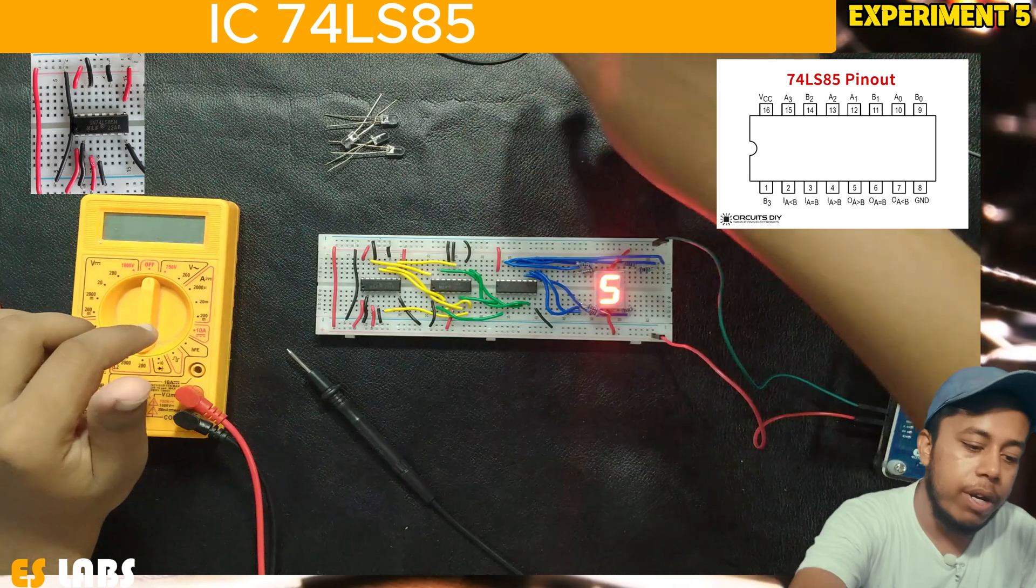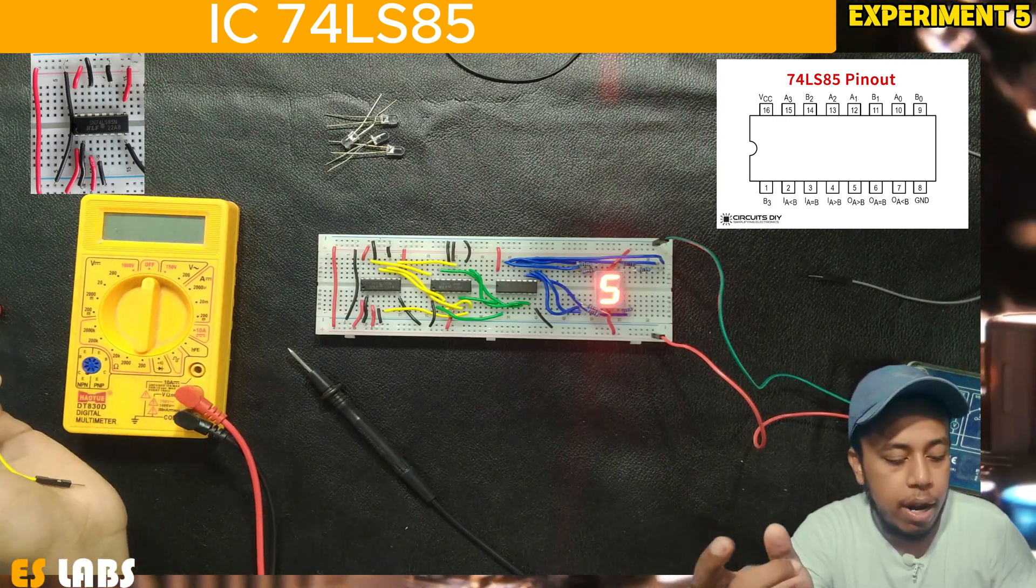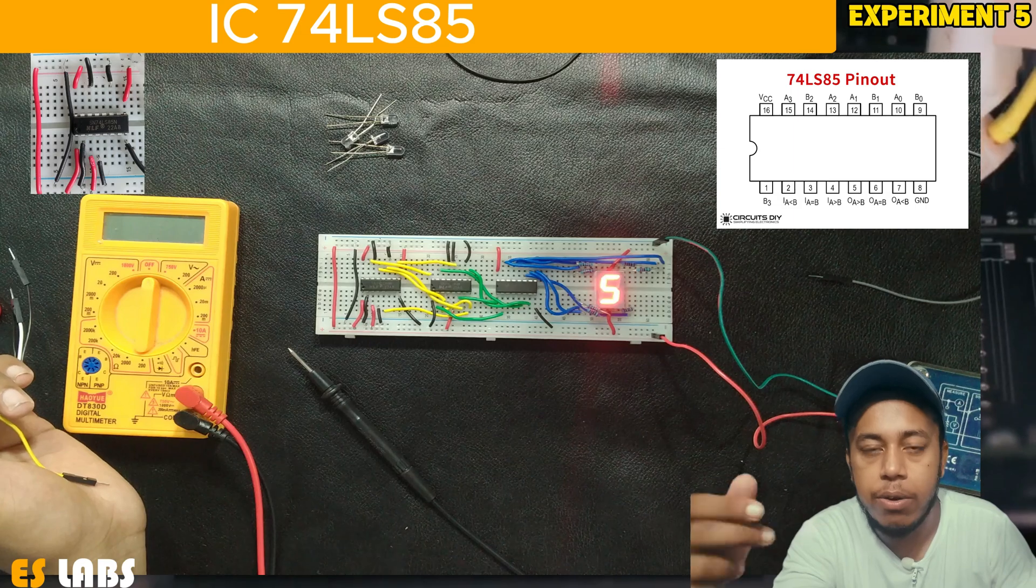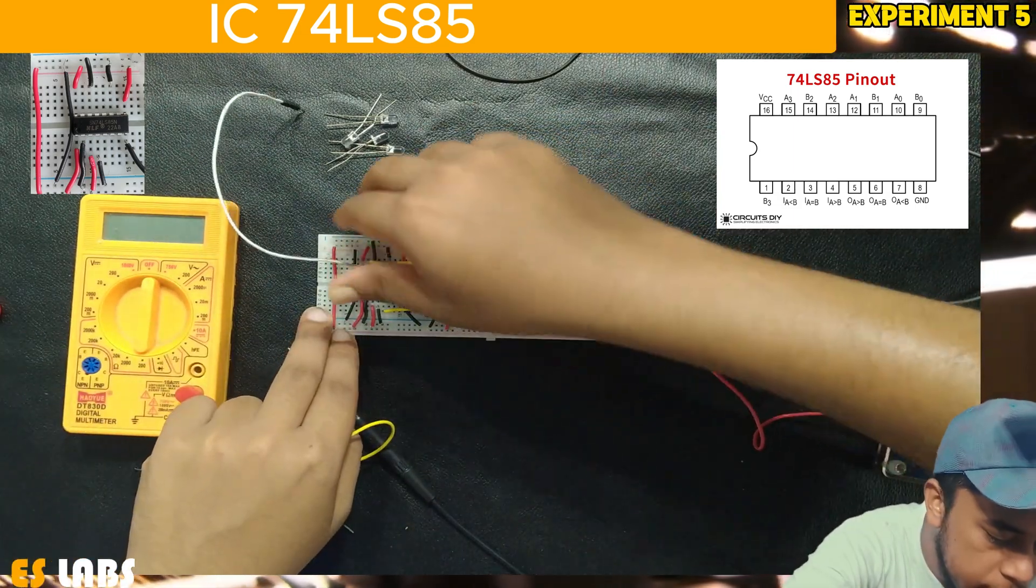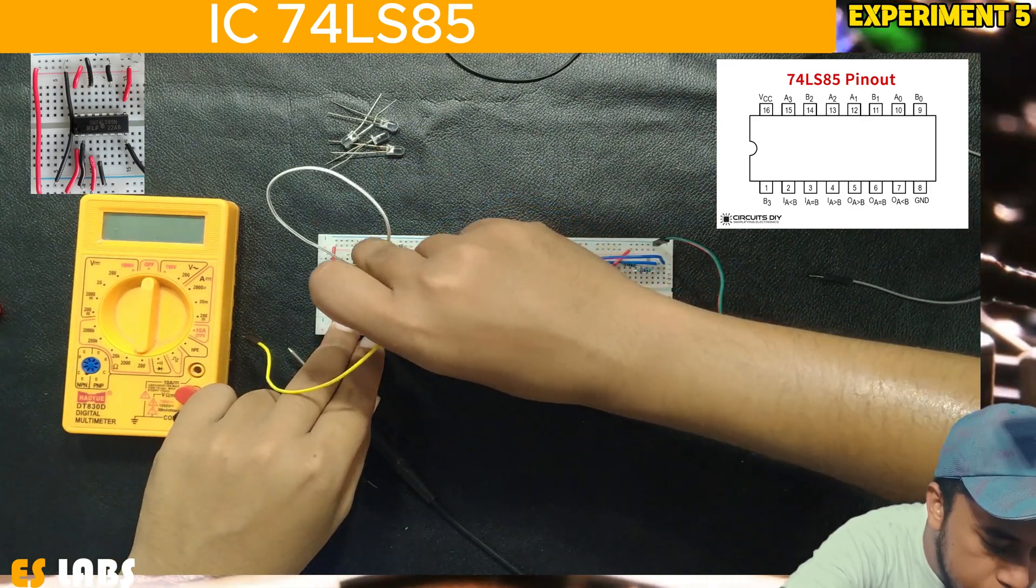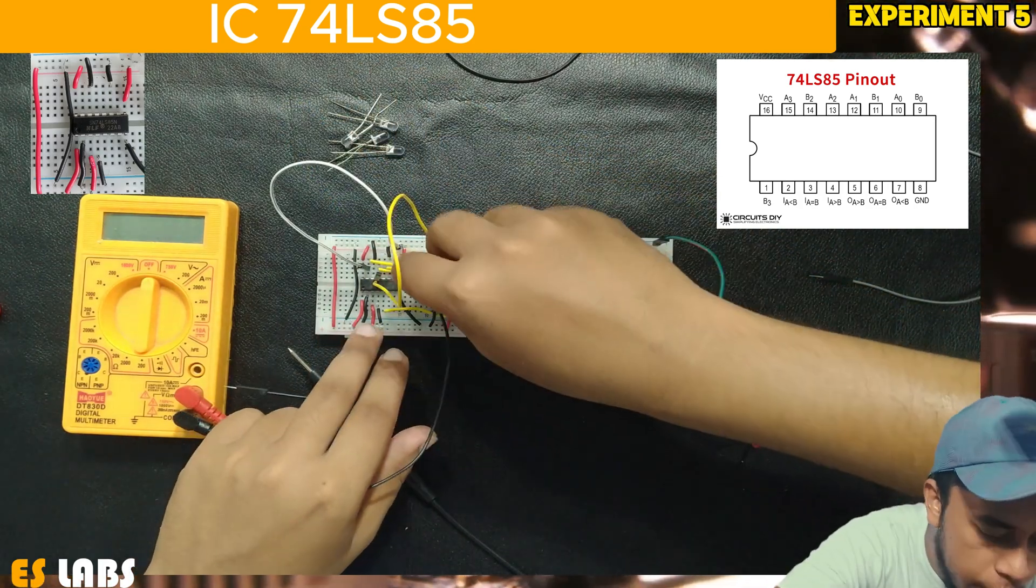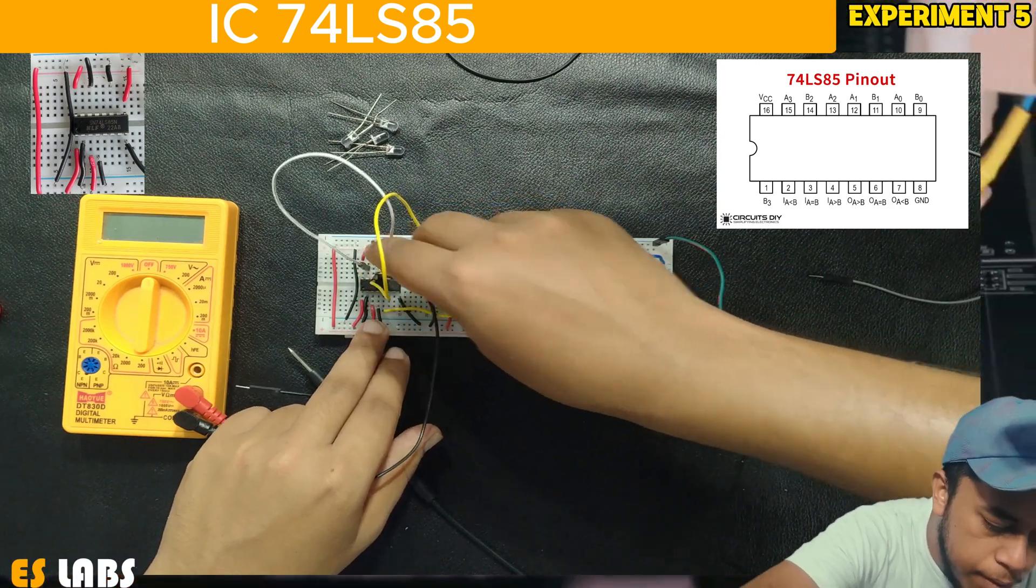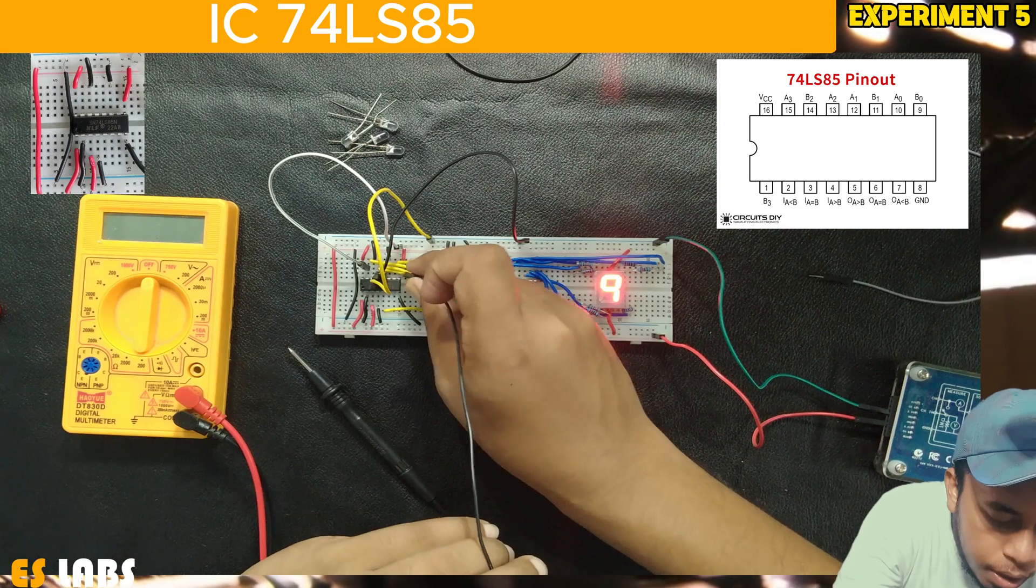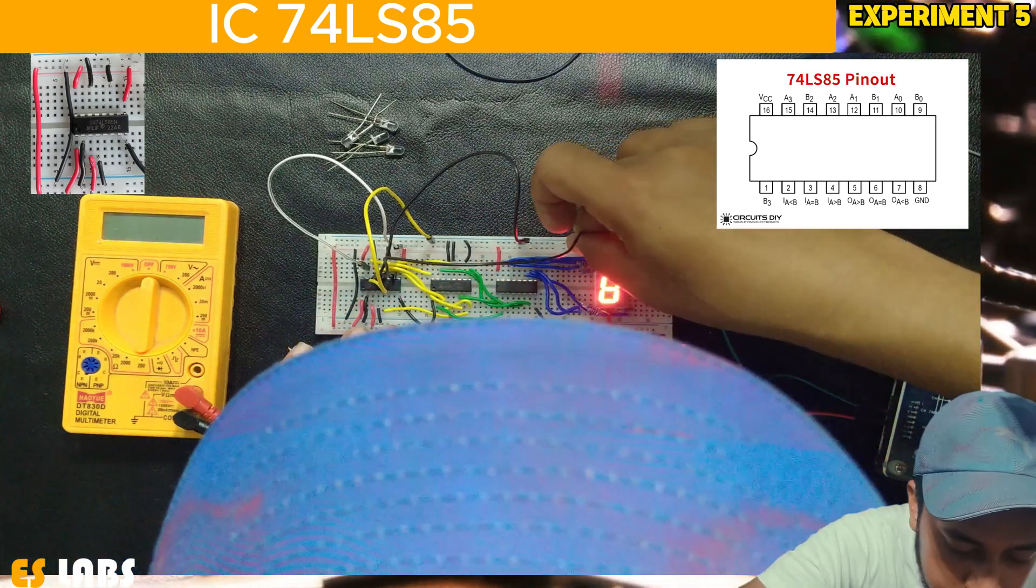So what we do, we take wires and connect input A to 1000 which is equal to 8, and at the output pins we measure voltage to see which is going high. So we connect A3 to high which means 5 volt, A2 to low, A1 to low, and A0 to low.